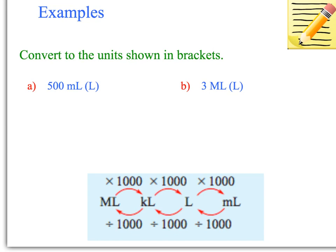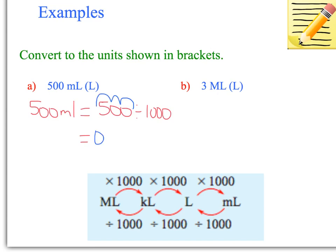So we need to convert 500 millilitres — that equals 500 divided by 1,000. When we're dividing, we move the decimal point left: one, two, three — three decimal places. So that equals 0.5 litres. So 500 millilitres is 0.5 litres, which is half a litre. You probably know that from working with milk.